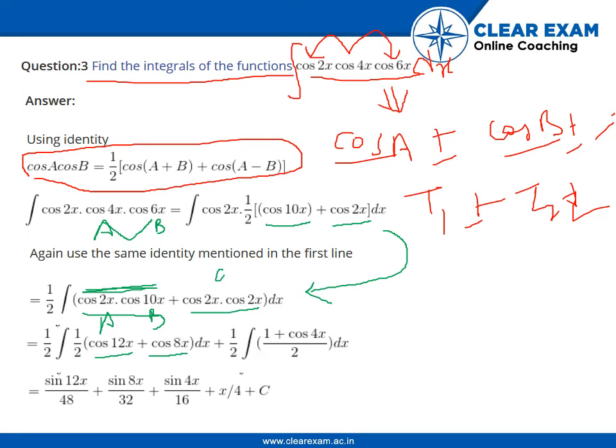So this can be simplified to the lower degree with the help of an identity. That is, cos 2x is equal to 2 cos squared x minus 1. If we shift 1 to this side and bring this 2 to the denominator, we get the value of cos squared x. So we apply the same identity over here and we get 1 plus cos 4x by 2.